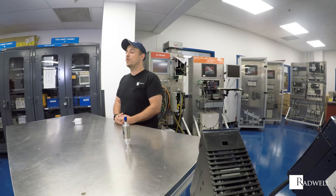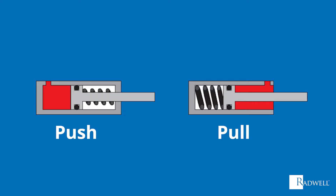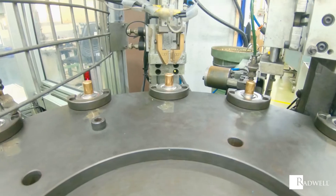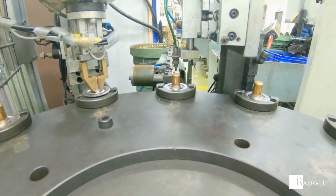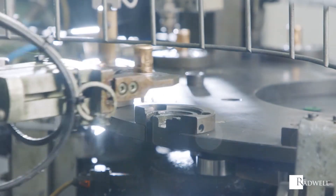The return stroke is accomplished by a spring, weight, mechanical movement, or gravity. There are two types of single acting cylinders: push and pull. For push, the pressurized force pushes the piston out of the cylinder; for pull, the pressurized force pulls the piston back inside. Single acting cylinders are used for applications where clamping, positioning, pushing, pulling, and marking are needed.